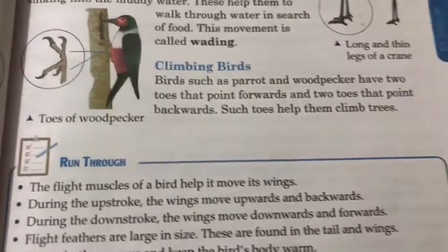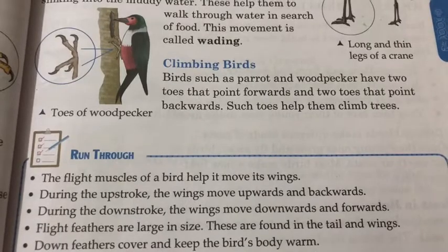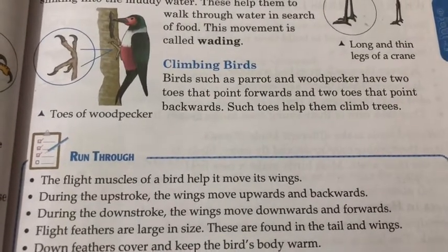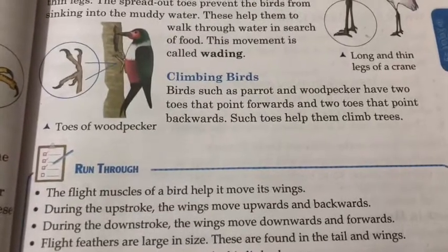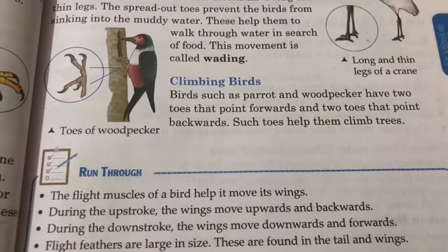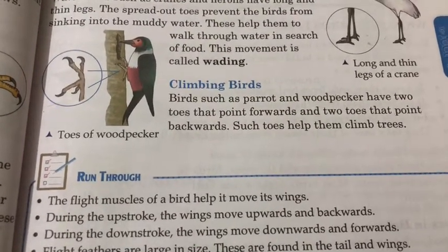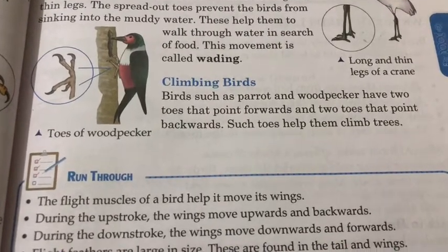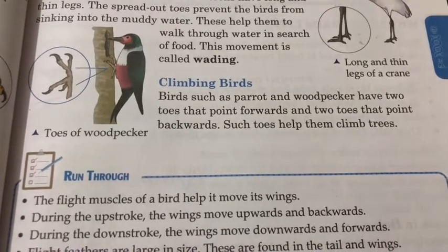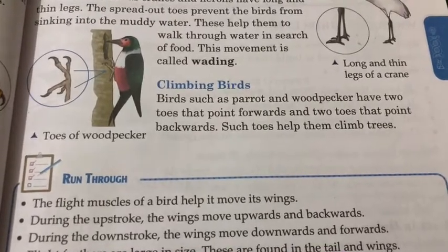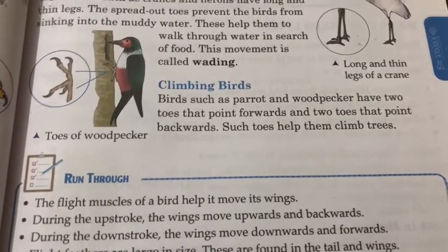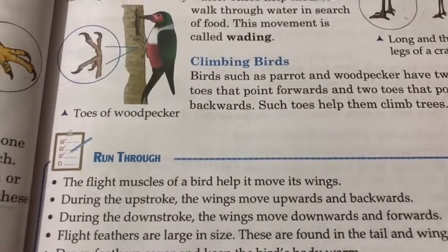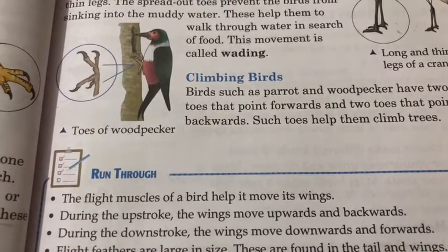Climbing birds such as parrots and woodpeckers have two toes that point forward and two toes that point backward. These birds are called climbing birds.